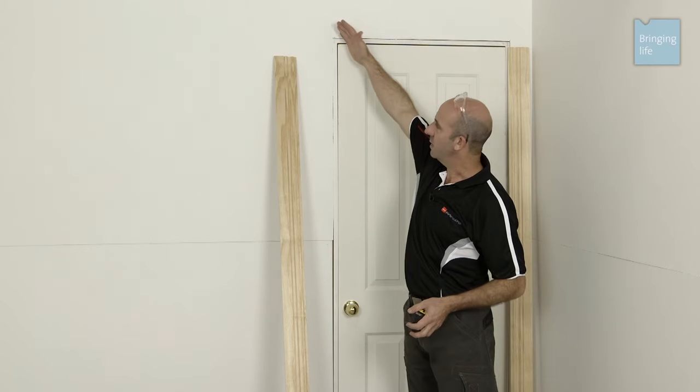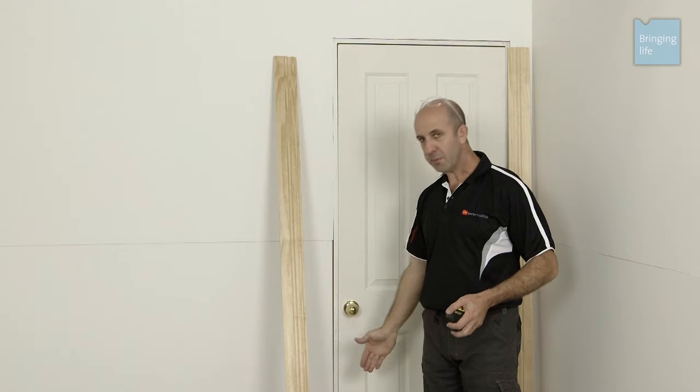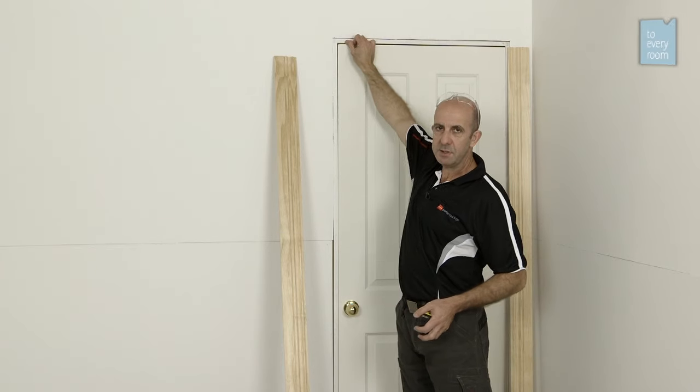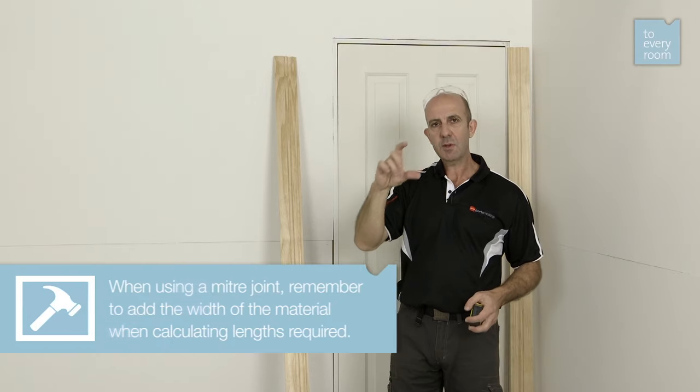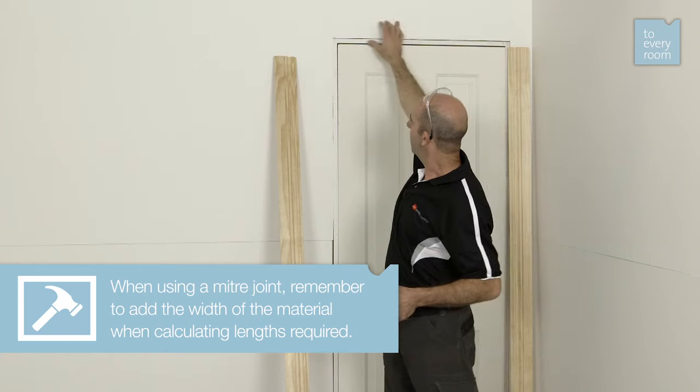When it comes time to measuring the quantities of material you'll need for your doorway, it really depends on the method you're going to use for joining. If you're going to have a miter in the top corner, you need to measure from the floor to the inside of the jamb, but you'll need to add the width of your material to allow for the top piece.